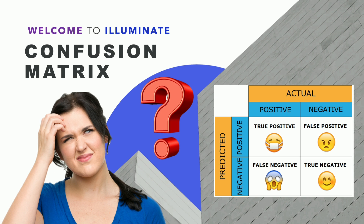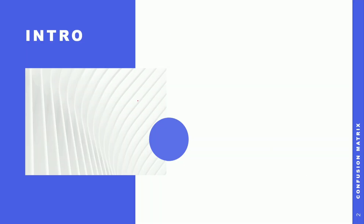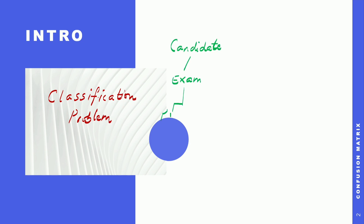Let us have a quick introduction on what a confusion matrix is and why it is important. Before the confusion matrix, we should know what is a classification problem. By the term classification, we understand we have to classify things into either/or. For example, a candidate appearing for an exam may either pass or fail — there are only two options, so either there is a chance of passing or failing. This becomes a classification problem.